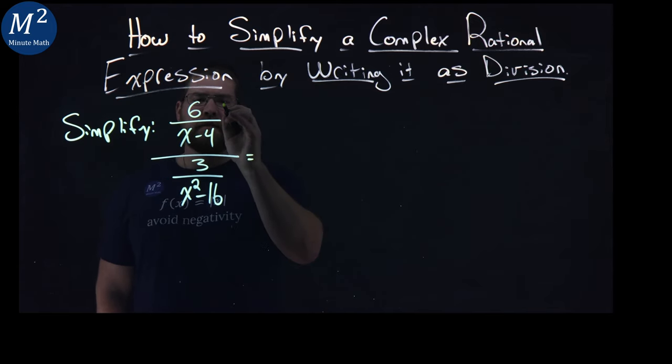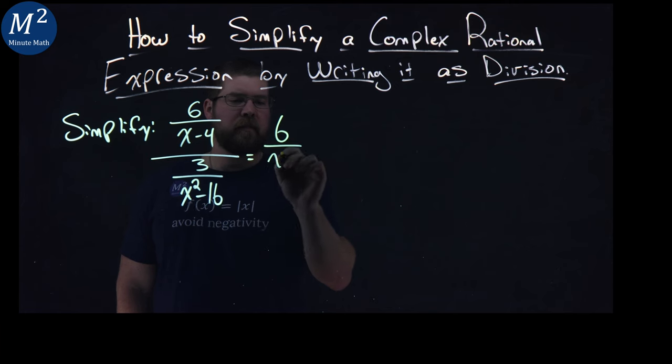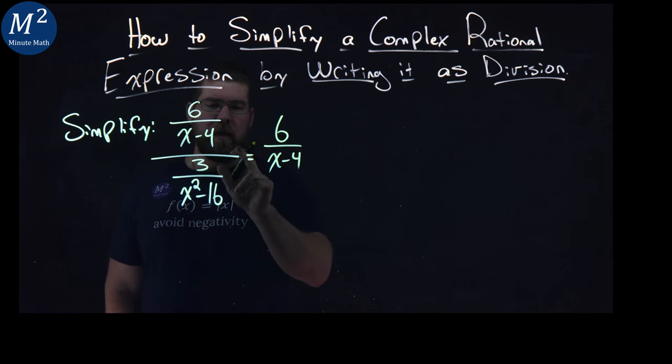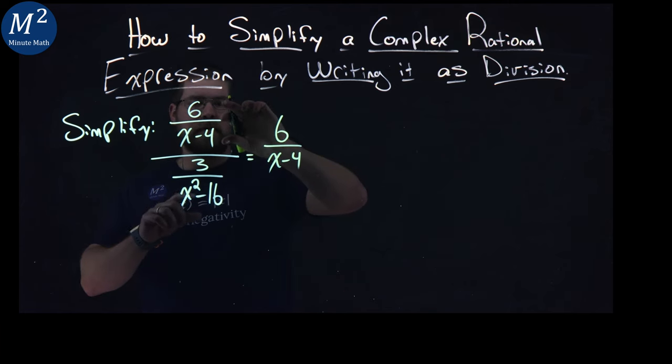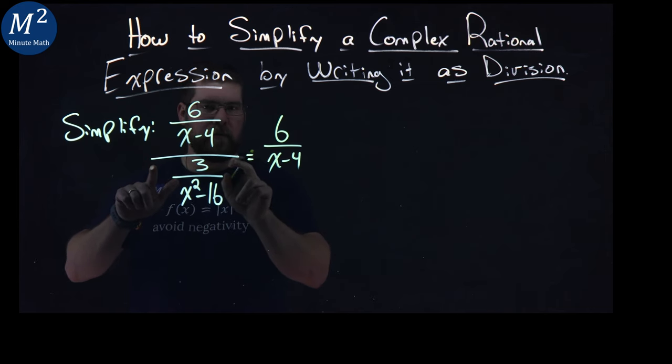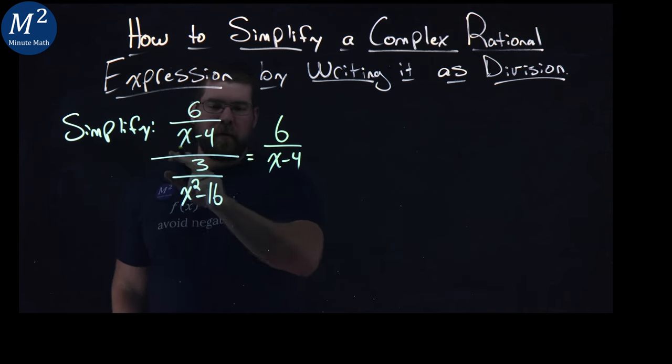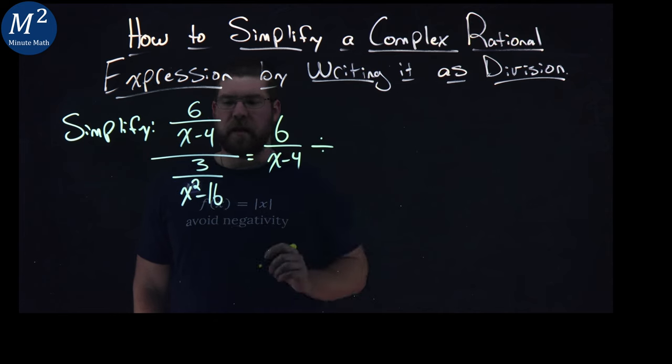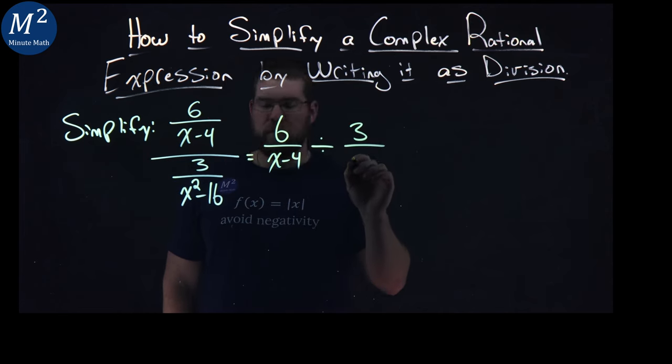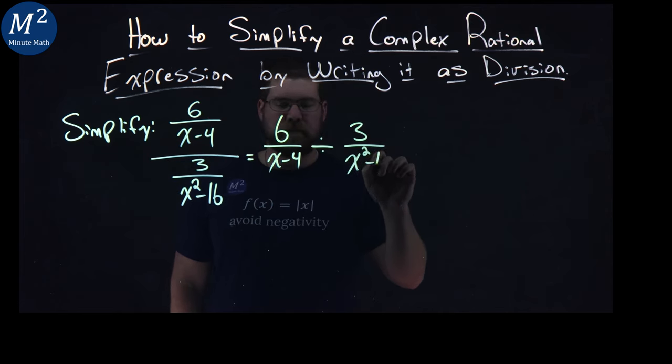So I'm going to start with my first part, 6 over x minus 4, and then we clearly see fraction here, fraction down here, and the overall fraction going on right here. So we can rewrite this big bar as a division sign, and we have 3 over x squared minus 16.